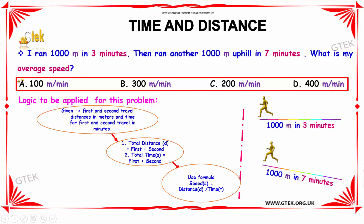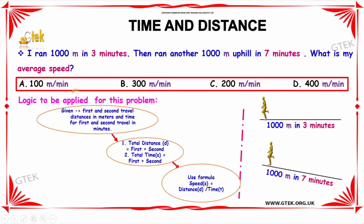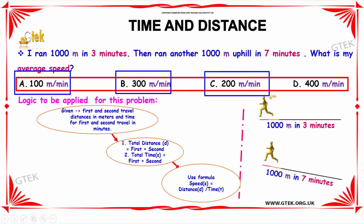The options given are: Option A is 100 meters per minute, Option B is 300 meters per minute, Option C is 200 meters per minute, and Option D is 400 meters per minute.